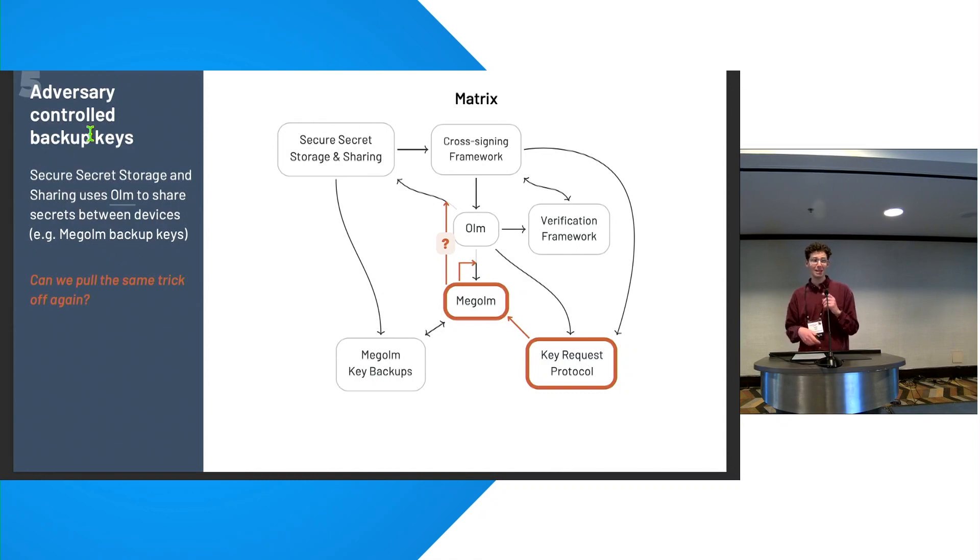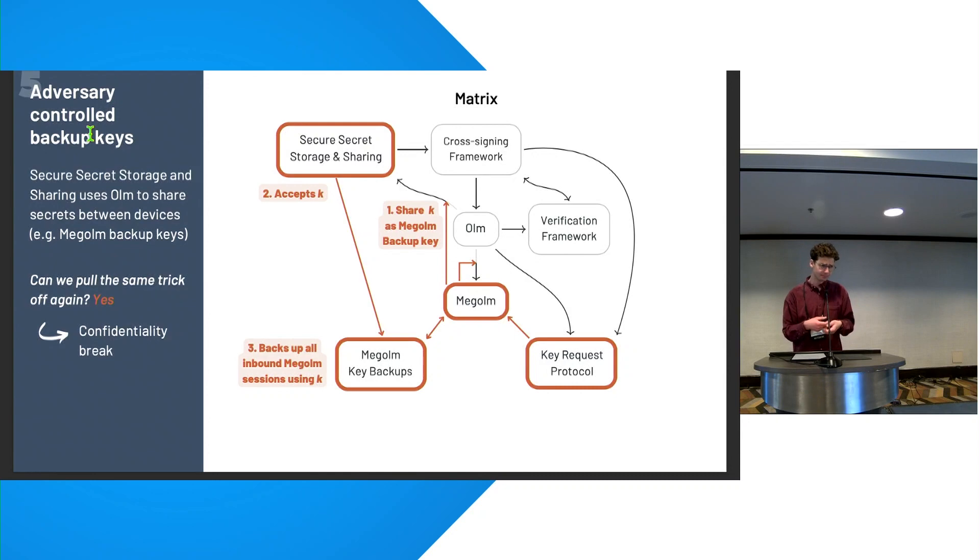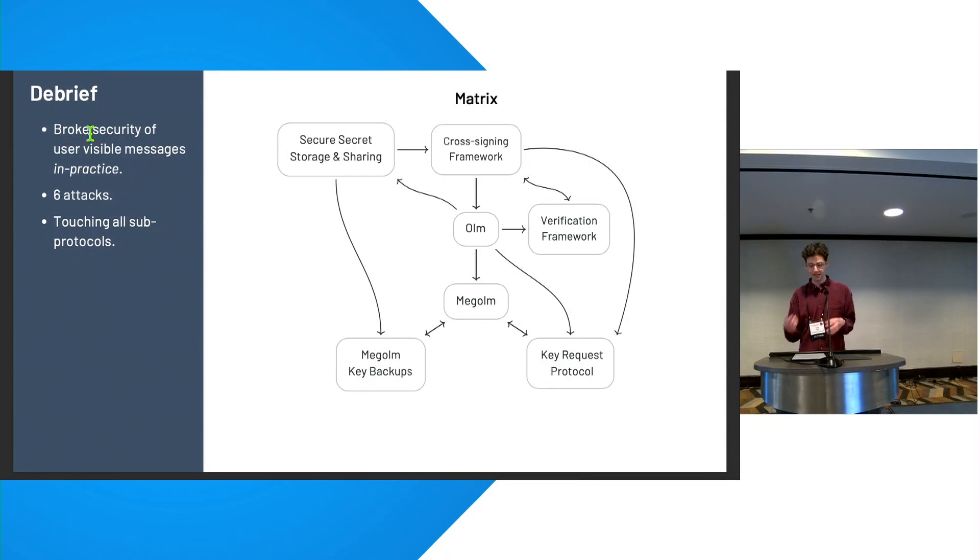We can then build upon this one more time. And we'll recall that the secure secret storage and sharing protocol uses Ohm for this request response sharing of user-level secrets. And one of those user-level secrets is the key that the MegaOhm key backup protocol uses to encrypt inbound sessions and back them up to the home server. So here we use a similar impersonation attack and protocol confusion to forcibly share a backup key that we've set. And the target will accept this key and start to back up all the MegaOhm sessions they have access to using this key, and we can decrypt it. So overall, our attacks touch all these different sub-protocols, but they mostly work on the interaction points between them rather than breaks of the particular insides of the protocols.